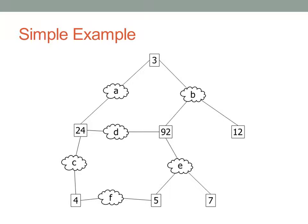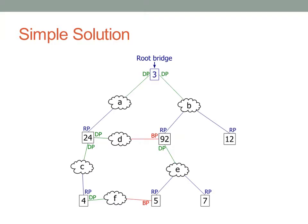Going to the next slide, we see the final scenario. Looking at switch 24: the root port has been selected on segment A, and segments D and C have both been selected as designated ports, since those interfaces have a lower cost to root — or in the case of segment D, the switch has a lower priority.